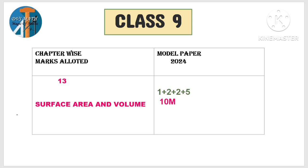Next: surface area and volume — cube, cuboid, cone, cylinder, hemisphere. First the surface area, then the volume. We have to cover both and get 10 marks. Questions include 1 mark, 2 marks, 2 marks, and a 5 mark question. Surface area and volume carries the 5 mark question from this lesson.